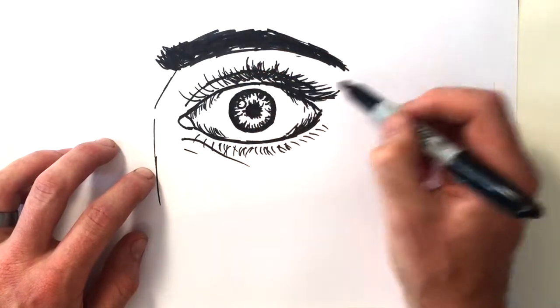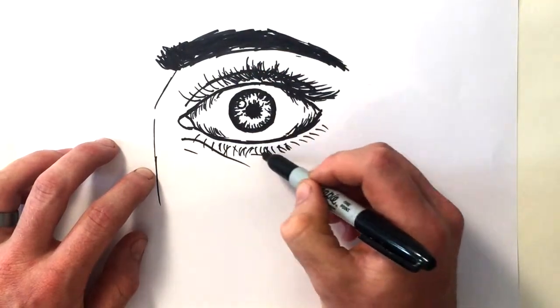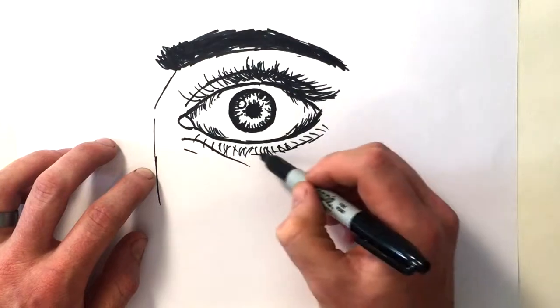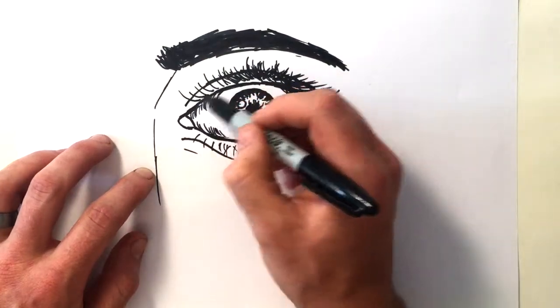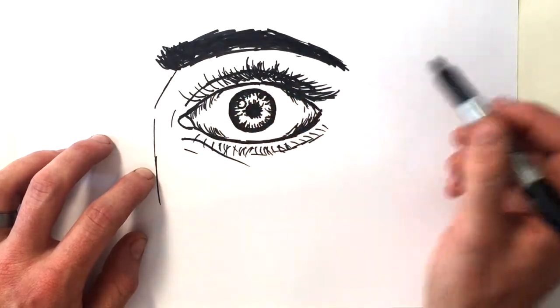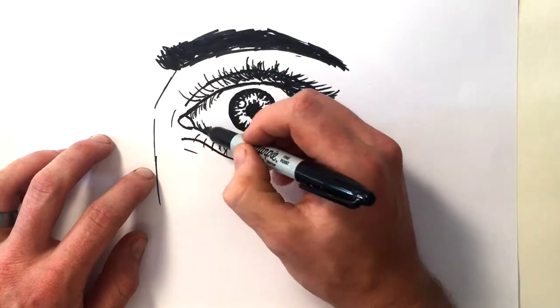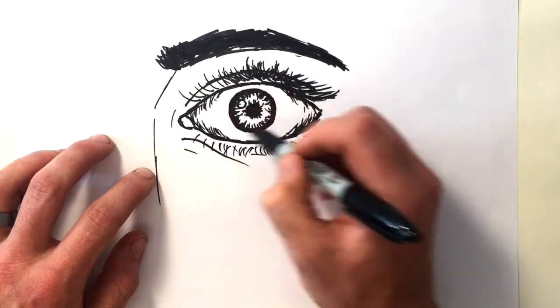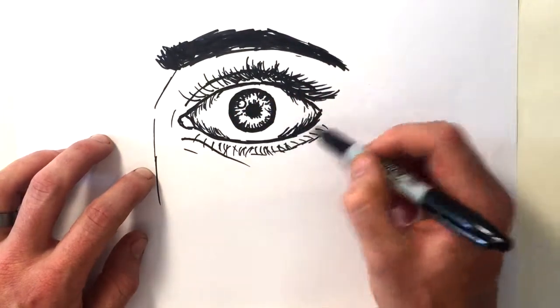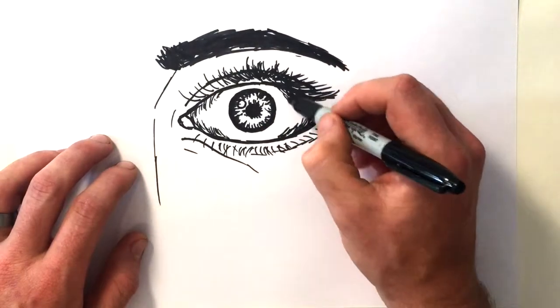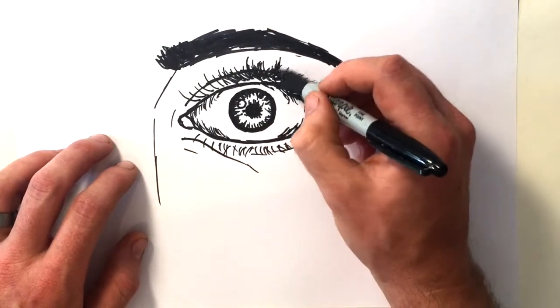You could add a few more lines around the bottom here to indicate more of the eyelid. Some more. Keep adding little details as you feel and see.